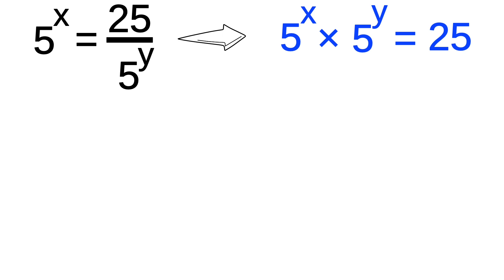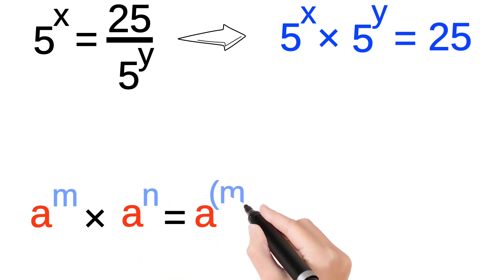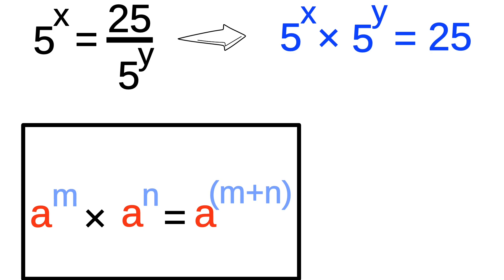Now we have to apply the following identity: a to the power m into a to the power n equals a to the power m plus n. By applying this identity, we will get 5 to the power x plus y equals 5 to the power 2.